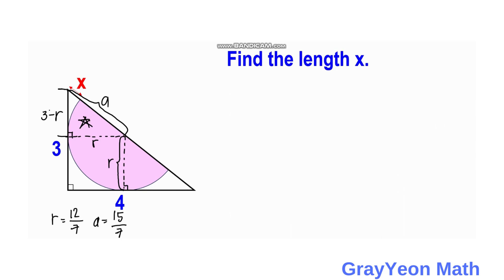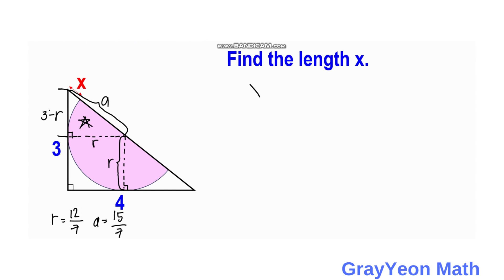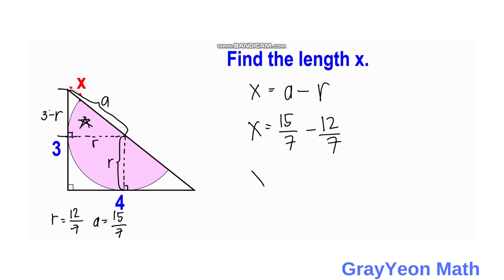For the final step, X is the difference between the hypotenuse A and the radius R. So X is equal to 15 over 7 minus 12 over 7, which gives X equal to 3 over 7 units.